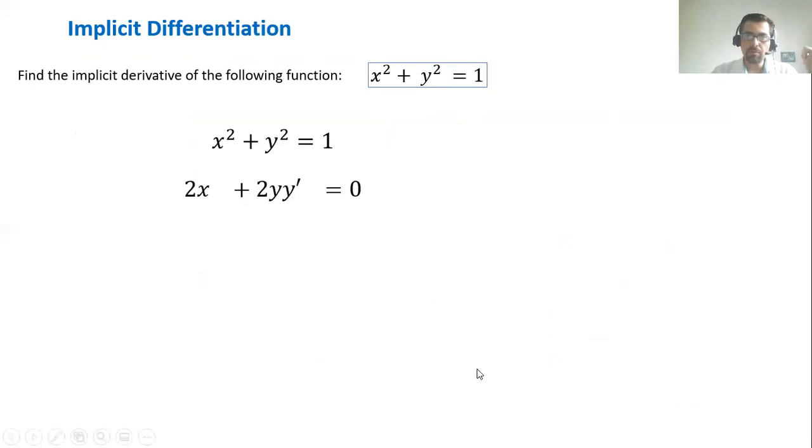When we differentiate both sides, the derivative of x squared is 2x. It's always a derivative with respect to x. When you take the derivative of y squared, you will have 2y times y prime because y is a function and y prime is the derivative of y with respect to x. When you take the derivative of a constant, you will have zero.